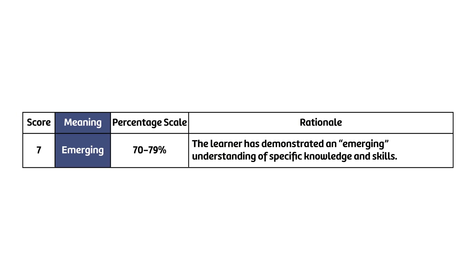Our rationale for a student in the 70–79 range is that the learner has demonstrated an emerging understanding of specific knowledge and skills. Based on that, if a student gets any of the proficient level questions correct, I believe they are at a minimum emerging in their understanding. Therefore I give them a 70 if they get one correct. If they get two correct, it shows they're really close to proficient but not quite there, so I give them a 75.